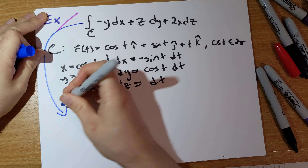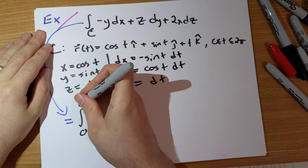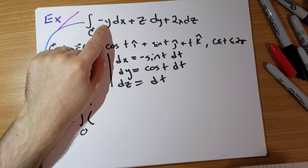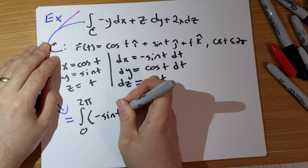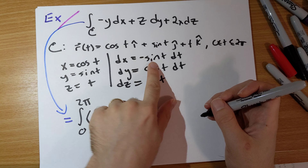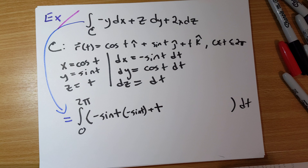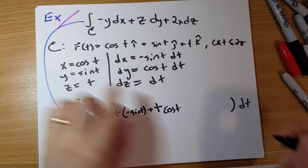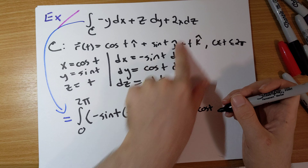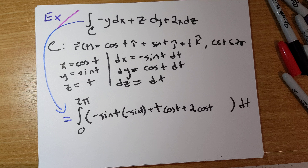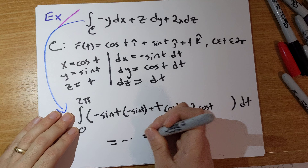This integral equals the integral along C from 0 to 2π of: negative y — which is negative sine t — times dx, which is negative sine t dt, plus z — which is t — times dy, which is cosine t dt, plus 2x — which is 2 cosine t — times dz, which is dt. Skipping over the details, you end up with π.